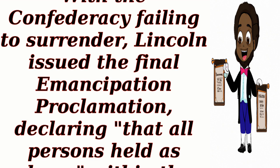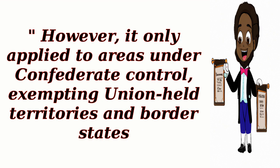The Final Emancipation Proclamation, January 1, 1863. With the Confederacy failing to surrender, Lincoln issued the Final Emancipation Proclamation, declaring that all persons held as slaves within the Confederate states are, and henceforward shall be free. However, it only applied to areas under Confederate control, exempting Union-held territories and border states.